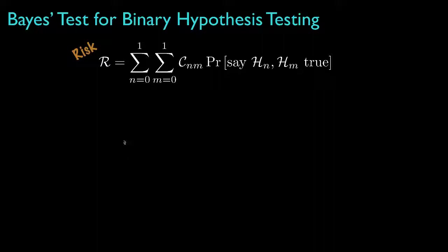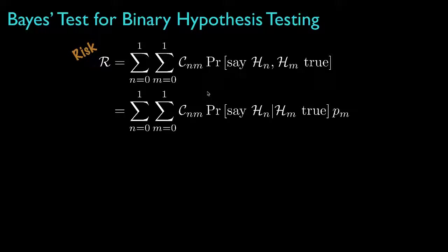Now, we could compute the average cost, which we often call the risk for our decision rule. And because we associate higher costs with errors, we'd like to design a decision rule that has a low value for this risk. In fact, if possible, we'd like to design a decision rule that has the lowest possible risk compared to all other decision rules. To do that, we'll rewrite the risk in terms of the prior probabilities and the conditional probabilities that we previously related to detections and false alarms.